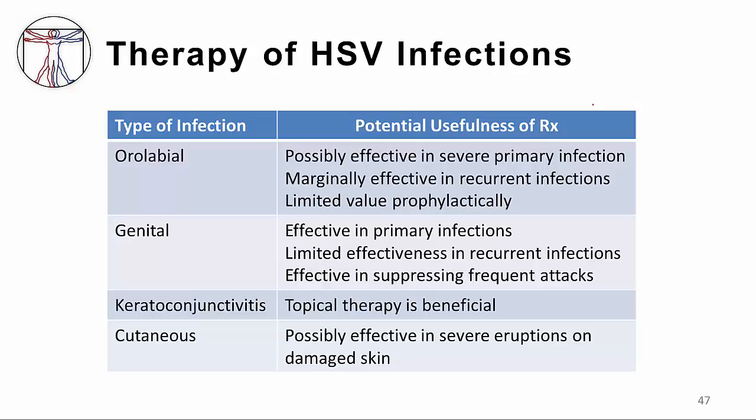This table summarizes where antiviral agents are effective in the treatment of different herpes infections. With regards to oral herpes infections, there is some marginal benefit for treating with antivirals, but because many oral infections are quite mild, they often are not treated and simply go away on their own. The exception would be a child with severe gingivostomatitis. There is also some utility of antiviral therapy in prophylaxis against frequently recurring oral infections.